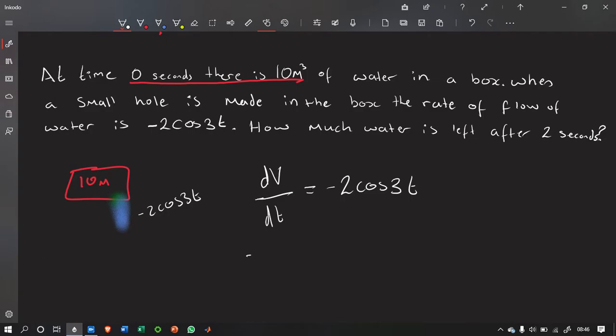So, from here, we'd integrate it. And the integral of this, so v, is going to equal to minus 2 over 3 sin 3t plus c.